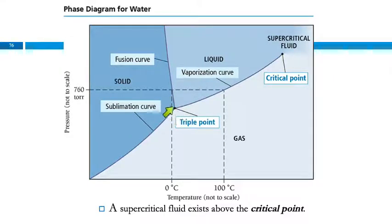And then we have this really cool place in the middle here called the triple point. And that is a combination of temperature and pressure where all three states of matter exist at the same time.